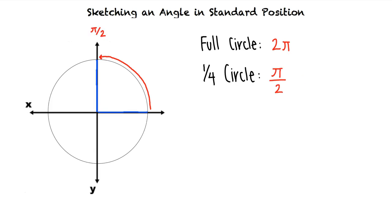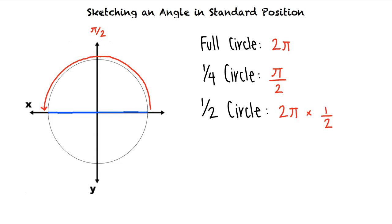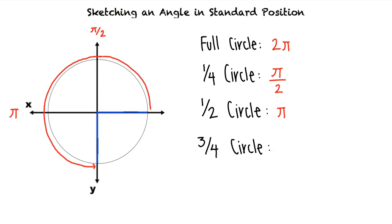If we go one-half of the way around the circle, we have made one-half of a revolution, which means our angle will measure one-half of 2 pi. Half of 2 pi is equal to pi radians. Finally, if we go three-fourths of the way around the circle, we have made three-fourths of a revolution, which means our angle will measure three-fourths of 2 pi. Three-fourths of 2 pi is equal to 3 pi over 2 radians.